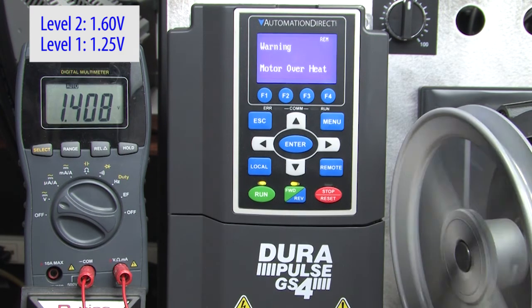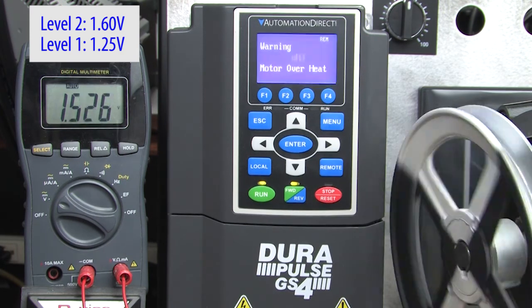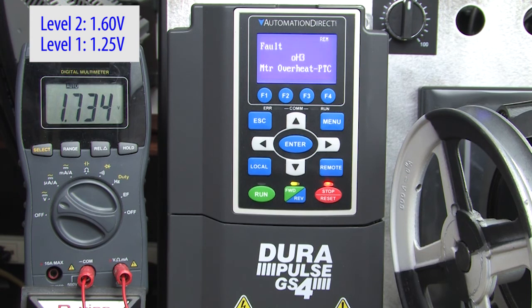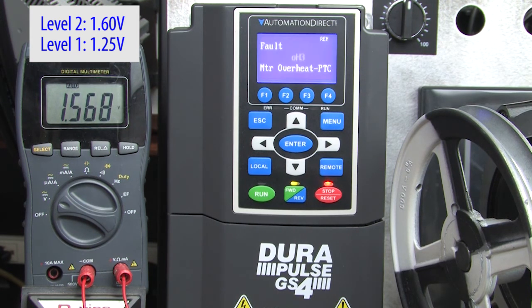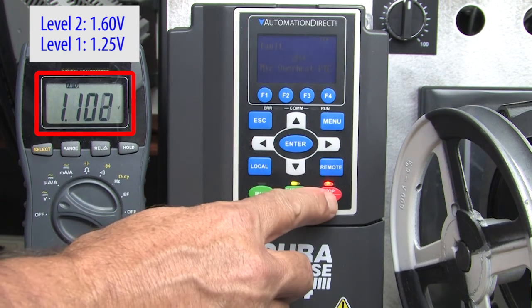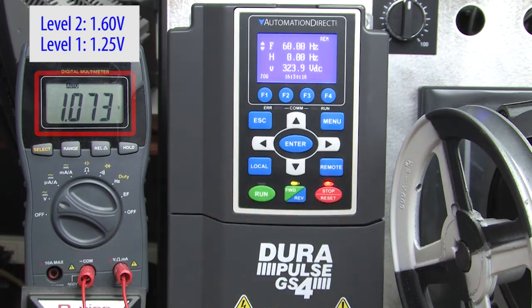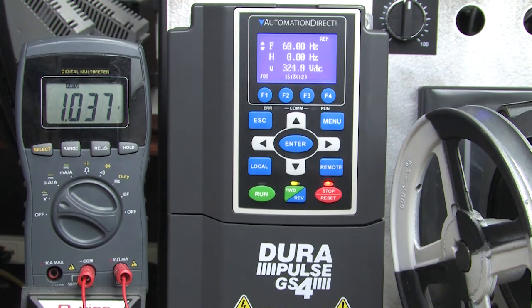Let's keep heating it to level 2. Sure enough, the motor ramps to a stop with no delay. Exactly what we asked for. One thing to be aware of, once the motor hits level 2, it doesn't automatically recover. Even if the temperature drops all the way back to normal. You have to clear the fault. I'll hit the stop on the keypad, but you could also clear it remotely from a PLC for example.